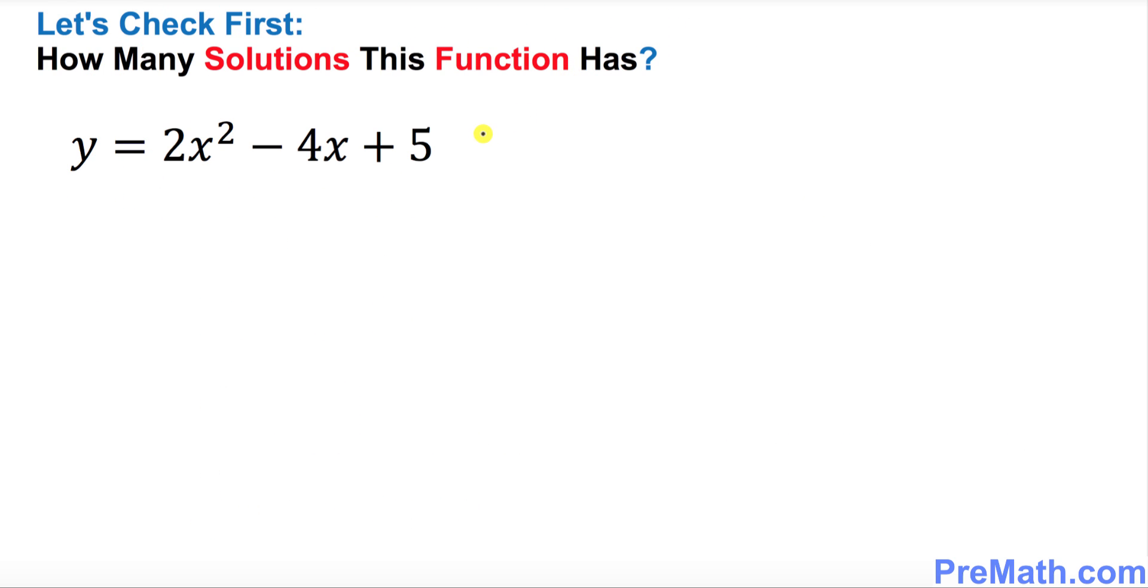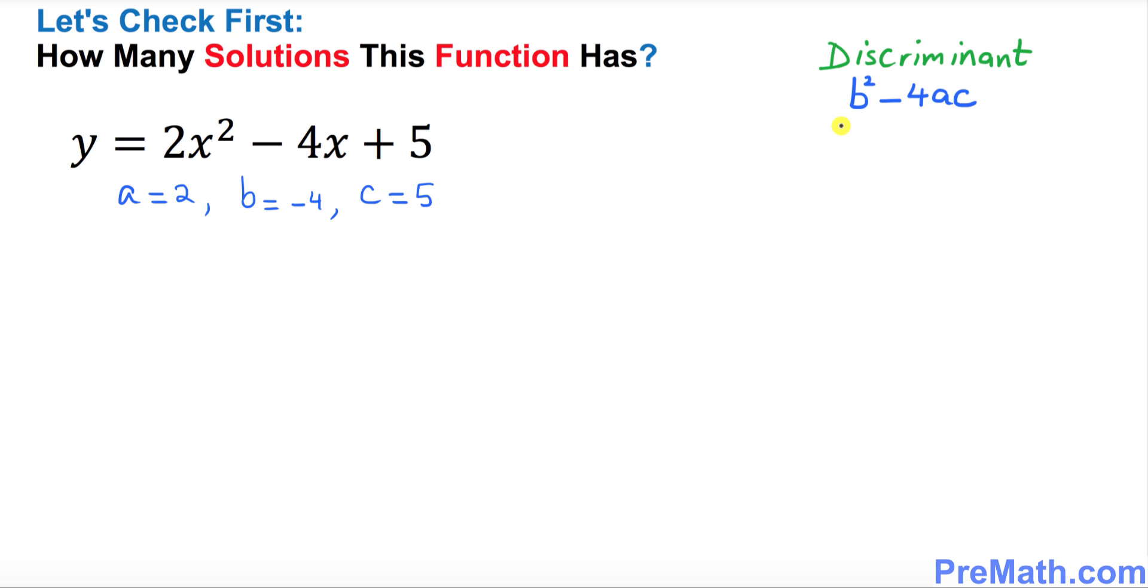In this very first step we are going to find out how many solutions this function has. To find that, we need the discriminant, which is b squared minus 4 times ac. Let's find out the value of the discriminant where a is 2, b is negative 4, and c is 5.